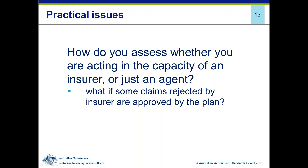We have received a number of questions. One which will arise commonly is how to address the classification of a member where they have a defined benefit component but are also in the accumulation side of the fund. Is such a member to be treated wholly as a defined benefit member, or is it appropriate to distinguish their defined benefit component as part of the defined benefits and treat the accumulation balance simply as part of the defined contribution disclosures? So is it person by person, or is it by type of benefit?